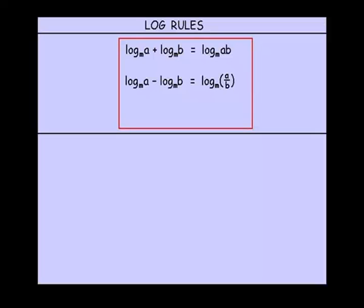The second rule: log of A minus log of B will equal log of A over B, where again we have the same base throughout, which is m.